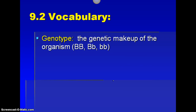Genotype is our next word, and it is the genetic makeup of the organism, which just means it's the actual letters for a trait. On your chromosomes you don't literally have letters showing up, but when we write them to represent them in some way, we show them as letters. I usually put little lines over my lowercase letters.